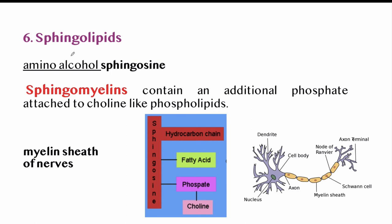Sphingolipids are lipids having the amino alcohol sphingosine. Sphingomyelin contains an additional phosphate group attached to choline, like phospholipids. Sphingolipids occur in the myelin sheath of nerves.